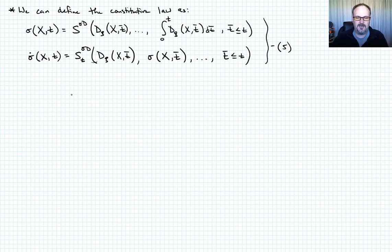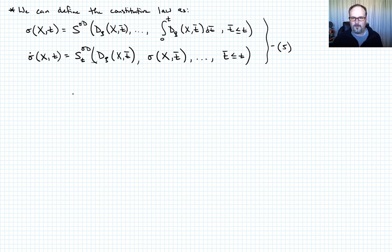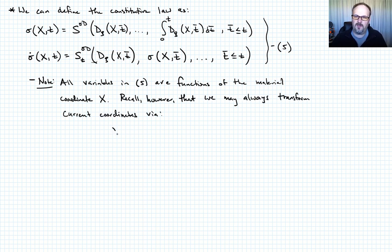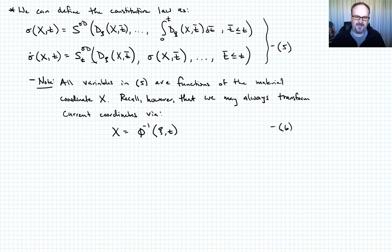All variables in equation five are functions of the material coordinates X. We can always transform current coordinates back to X via the mapping: X equals phi-inverse of (c, t). We can't always find that mapping analytically, but it exists. So even in the updated Lagrangian form, we're still in a Lagrangian description.